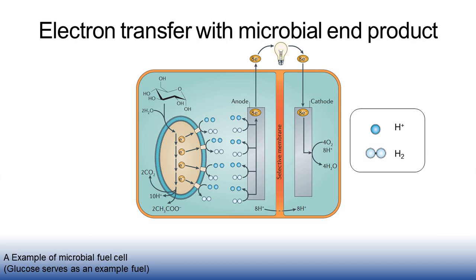This is an indirect microbial fuel cell. A fermentative microorganism converts glucose to an end product, hydrogen, which can abiotically react with the anode to produce electrons and protons.